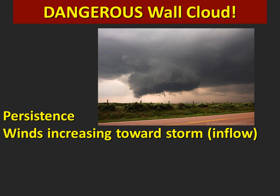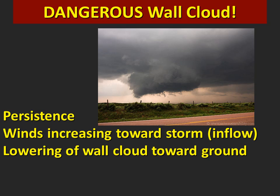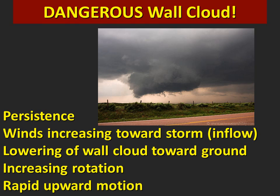Persistence for five to ten minutes or more. Inflow winds that are increasing toward the storm. The lowering of the wall cloud toward the ground. Increasing rotation in the wall cloud. And an increase in rapid upward motion in and around the cloud. If the wall cloud displays one or more of these signs, the storm may be very close to producing a tornado.